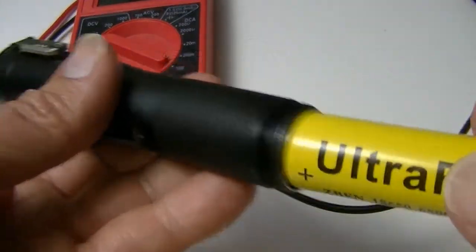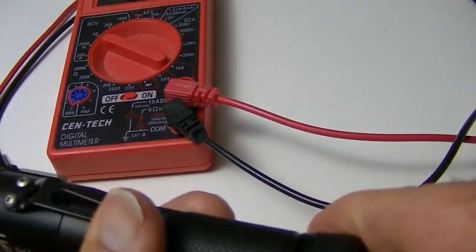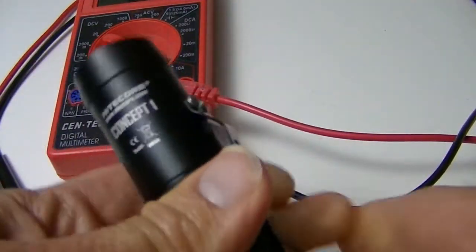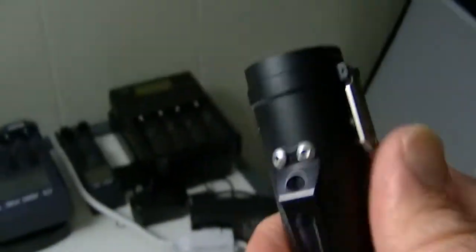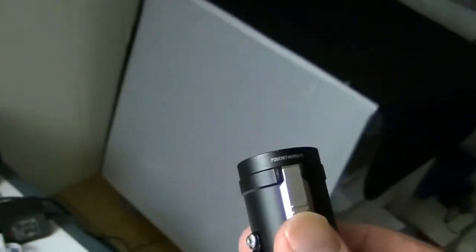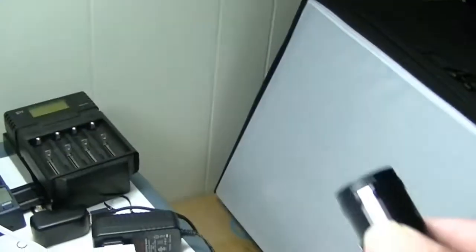This happens to be the Nitecore Concept flashlight. I'm going to put this in the light here and turn it on high mode, which is 800 lumens. Let me press the button and make sure we're going to be on high mode. There's moonlight, there is low, there's medium. Okay, let me just do this again. Moonlight, low, medium, high.